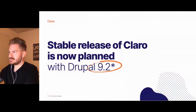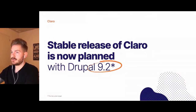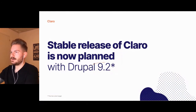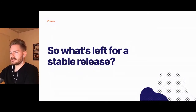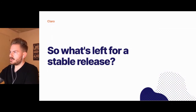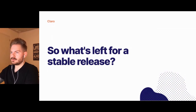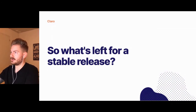The stable release of Claro is now planned to come with Drupal 9.2, which is due sometime in summer next year — around June. In the long term, the plan is that Claro will replace Seven in core once it reaches stable. You might ask what's left for a stable release. It's already quite stable and used in a lot of different projects in production. It's mostly some finishing touches — the media library, contextual links, toolbar style updates — but it's already usable for production use.